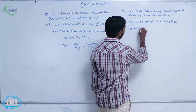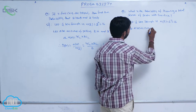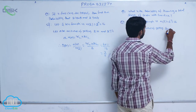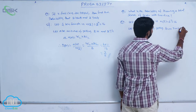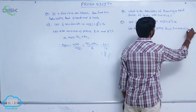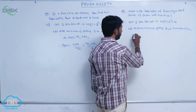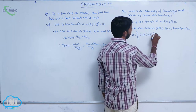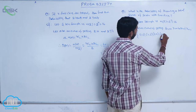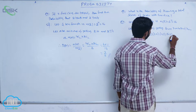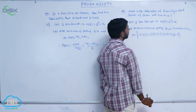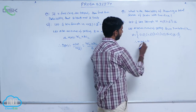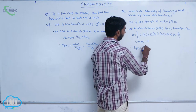Let A be the event of getting a sum of seven on both dice. The outcomes giving a sum of seven are: (1,6), (2,5), (3,4), (4,3), (5,2), and (6,1). Therefore, P(A) is equal to n(A) by n(S).